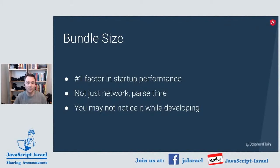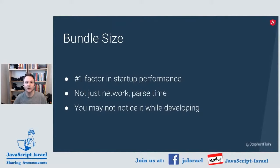Bundle size affects not just download time in terms of throughput, but also parse time. If you have a very fast internet connection but a very slow CPU — which we see on a lot of mobile devices around the world — your application can still end up feeling slow, because that slow CPU device has to parse and then execute all that JavaScript. We as developers often forget about this context; we don't develop on the slow machines that our users end up using. We have fast internet connections, dual monitors — the best possible experience.